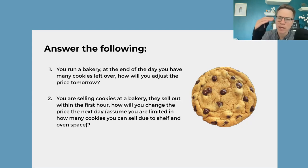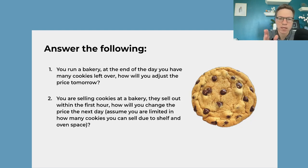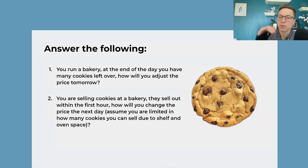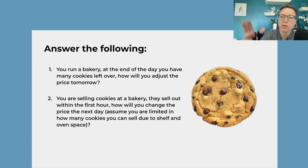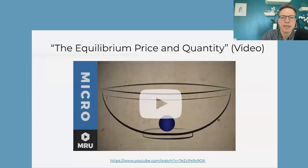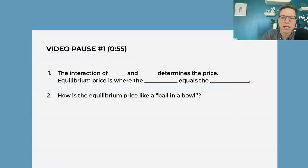The idea here is how does a market reach equilibrium — where the quantity supplied and the quantity demanded are equal. We have this sort of question: you're running a bakery, you set the price too high, you have much left over — what do you do? You're going to lower the price the next day. You sell out too early — what are you going to do? You're going to raise the price the next day. We have a video that goes through how markets reach that equilibrium.